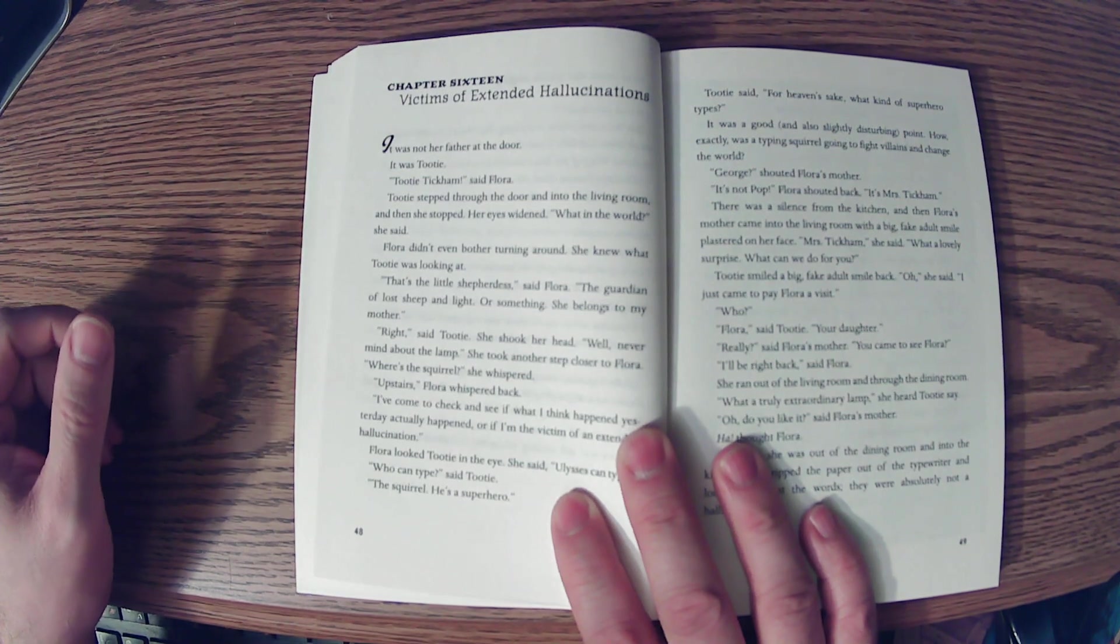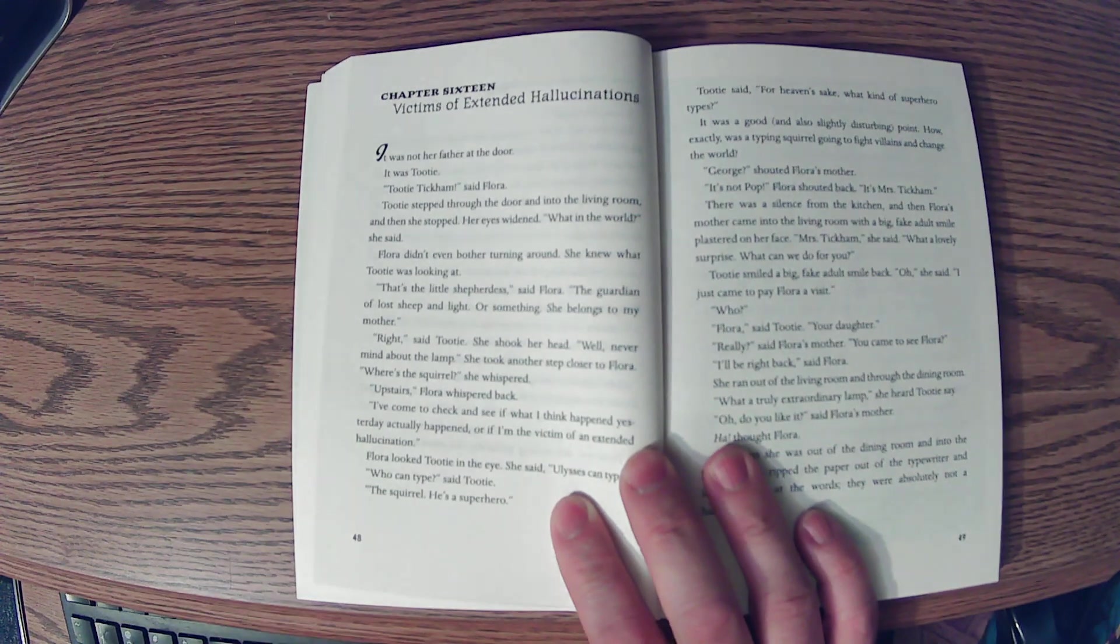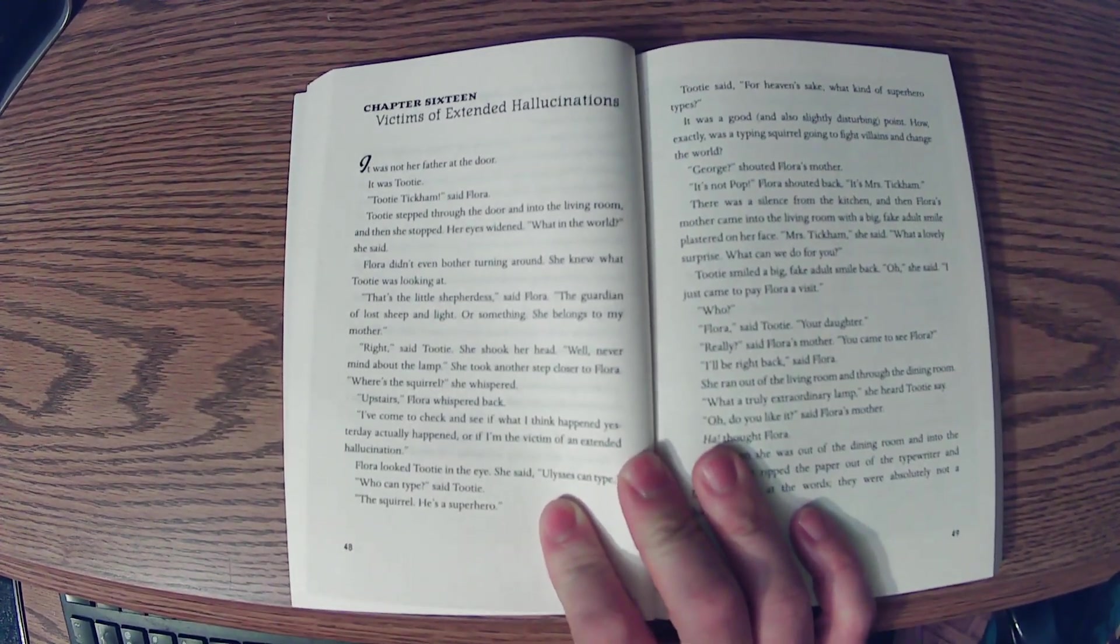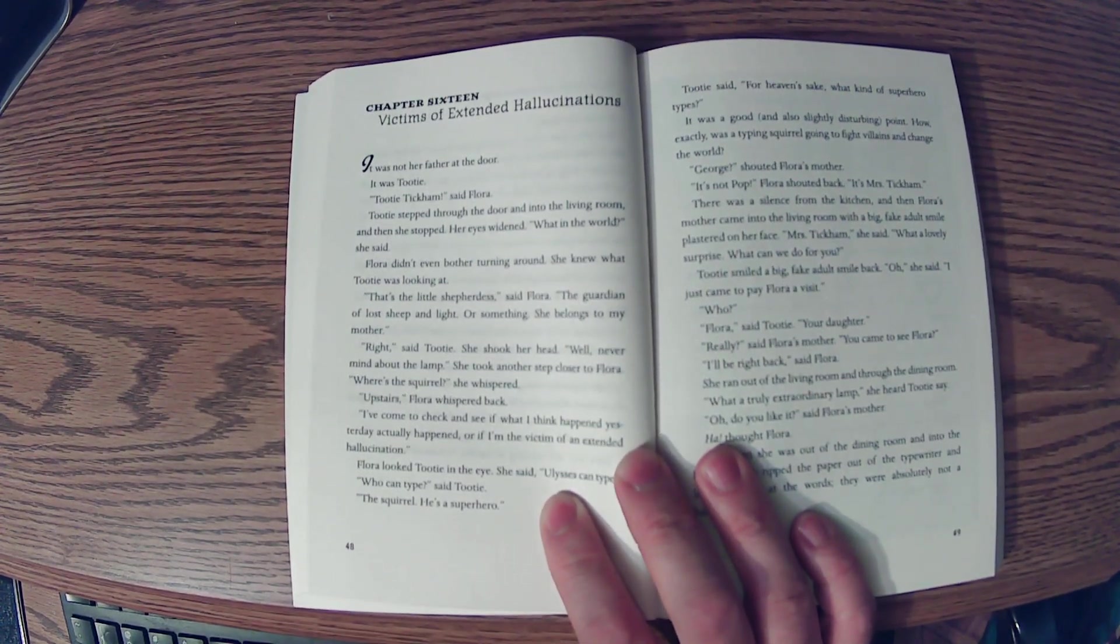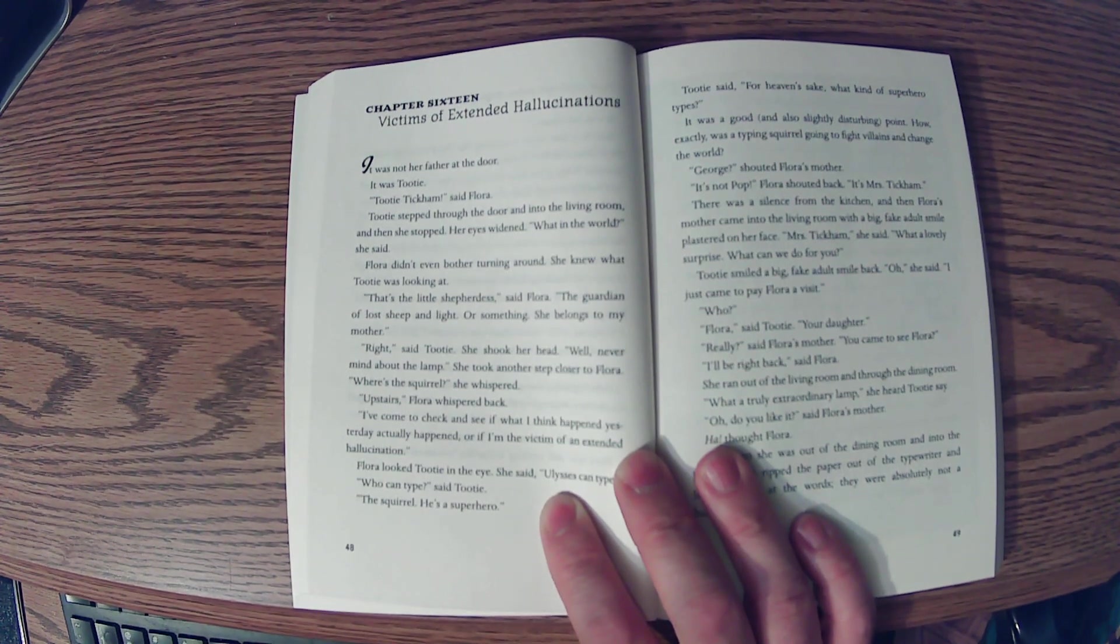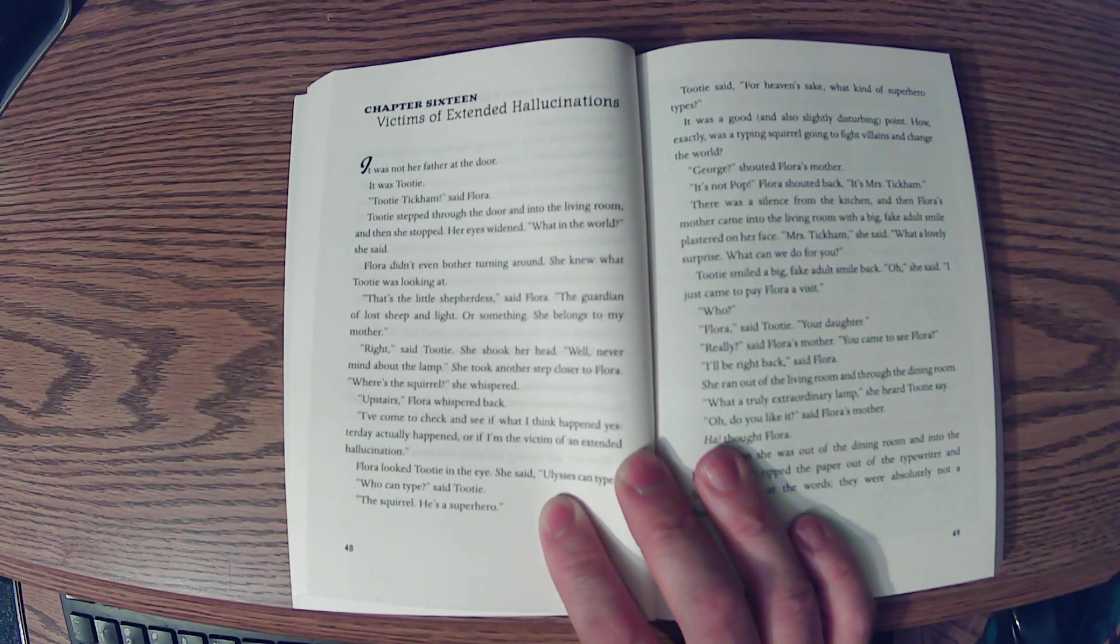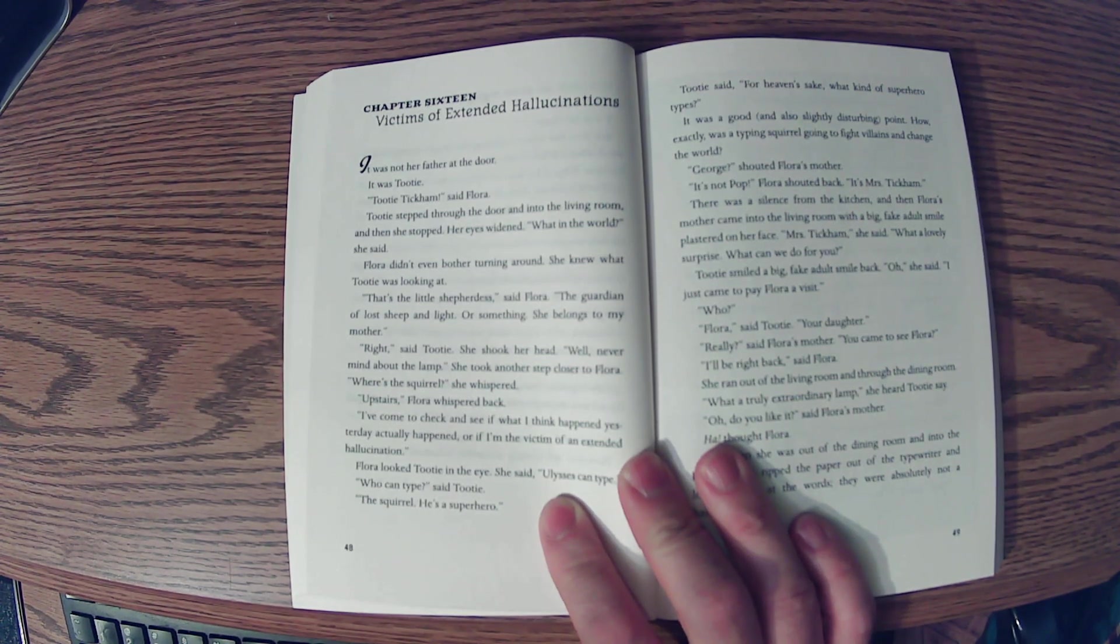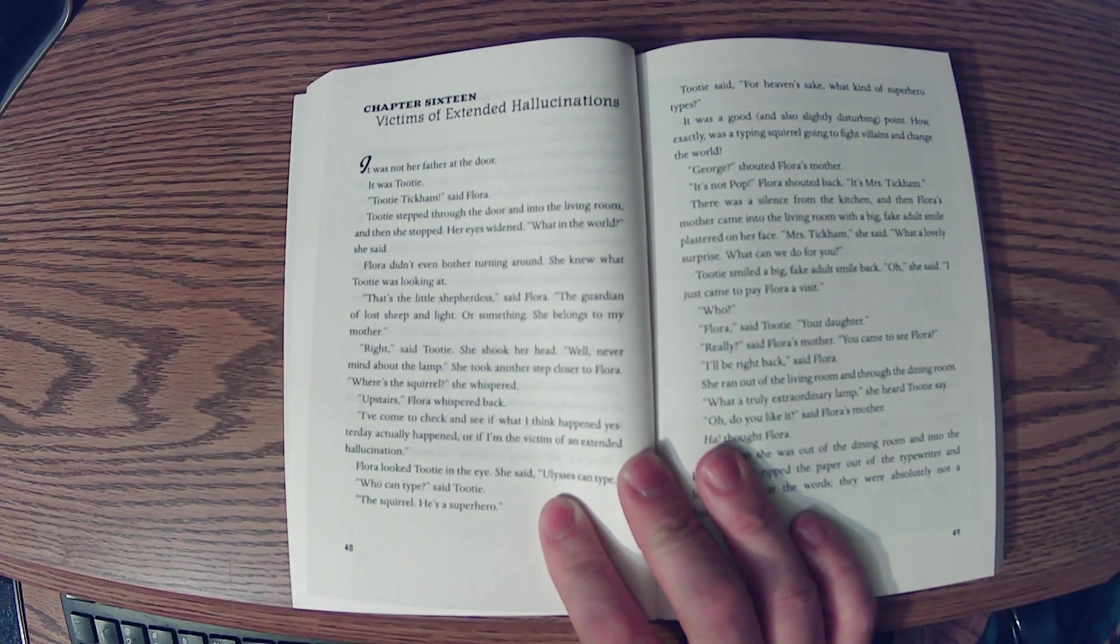Chapter 16, Victims of Extended Hallucinations. It was not her father at the door. It was Tootie. Tootie Tickham, said Flora. Tootie stepped through the door and into the living room. And then she stopped. Her eyes widened. What in the world, she said. Flora didn't even bother turning around. She knew what Tootie was looking at. That's the little shepherdess, said Flora, the guardian of lost sheep and light, or something. She belongs to my mother. Right, said Tootie, and she shook her head.